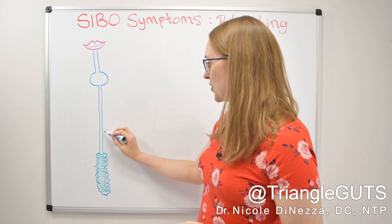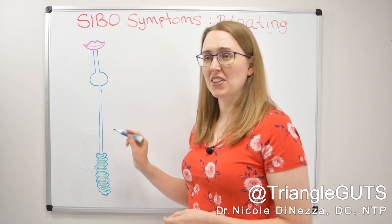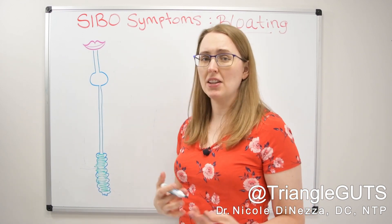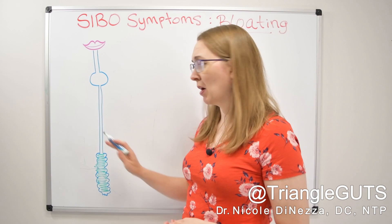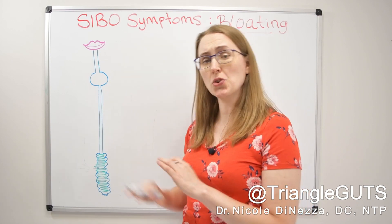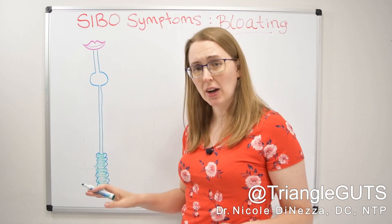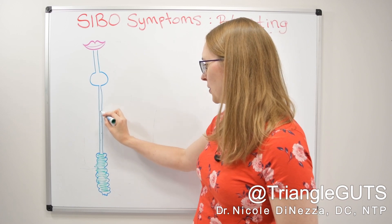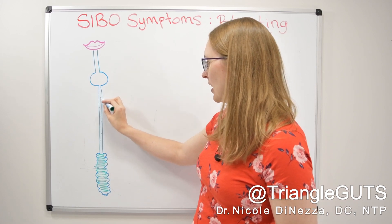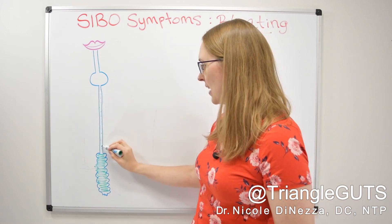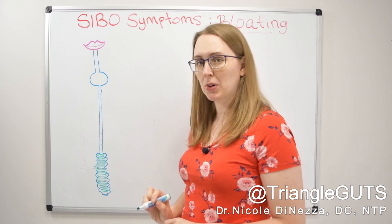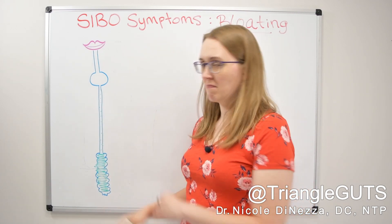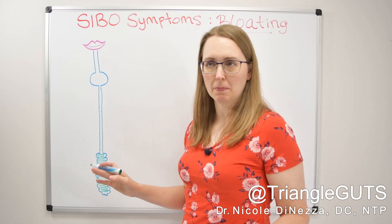However, the small intestine normally doesn't have a whole ton of bacteria — it does have some, and that is a common misconception in the SIBO world. The small intestine, stomach, and esophagus should not be sterile, but they should be more sparsely populated with bacteria in a normal situation — a peppering of bacteria as opposed to bacteria central like the colon.